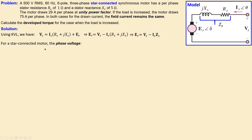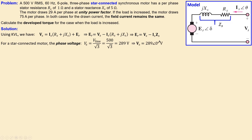For a star-connected motor, the phase voltage is found by dividing the line voltage by the square root of three: 500 volts RMS divided by √3 gives 289 volts RMS. Converting to polar notation, the phase is zero degrees because we take the phase voltage as our reference.